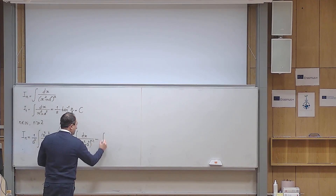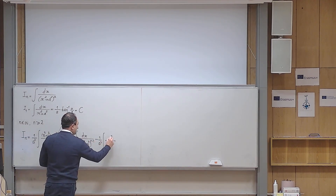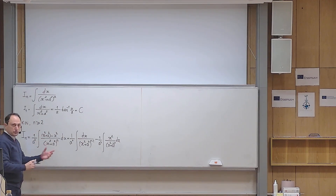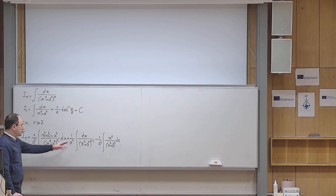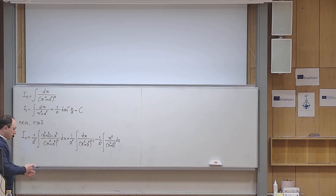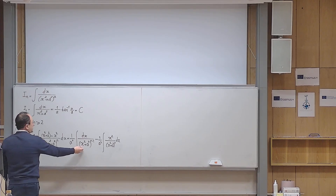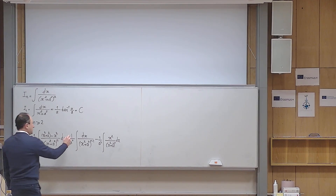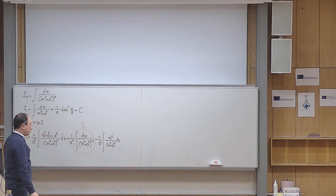I have 1 over a squared out front, and then x squared over x squared plus a squared to the power of n, times dx. So I decomposed this single integral into two integrals — one is exactly I sub n minus 1. If you compare the first integral with the original, you see it matches except that n minus 1 replaces n. So a good name for the first integral is I sub n minus 1.